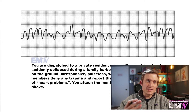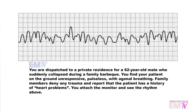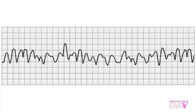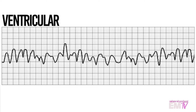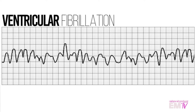Let's go ahead and take a look at the rhythm and identify it. So right off the bat, this rhythm is irregular. It is inconsistent. It is chaotic. There's no semblance of any sort of organization. There aren't any P waves, QRS waves, or T waves. All you're seeing here is a wide, chunky, chaotic waveform. The only waveform that looks like this is going to be ventricular fibrillation, or V-fib.